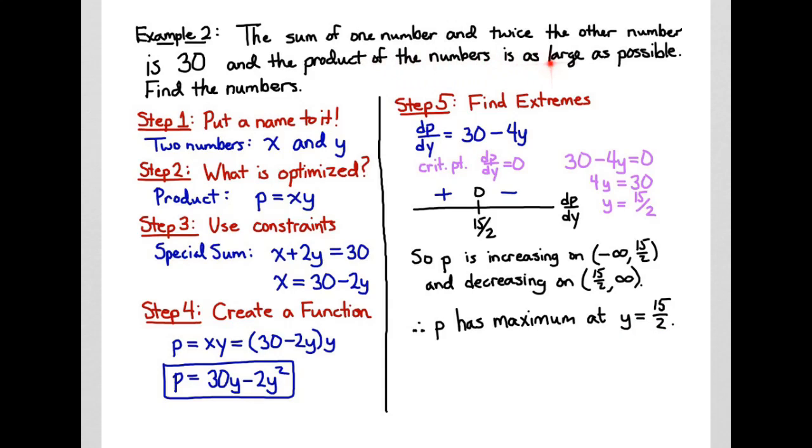We finish by answering the question. The question was to find the numbers, and we have y equals fifteen halves. I'm also interested in the value of x. I use my formula when I solved for x: x equals thirty minus two y, which allows me to solve and get the value that x equals fifteen. That finishes the problem.